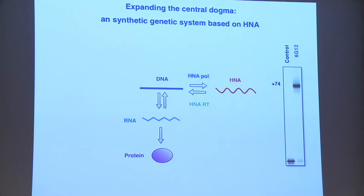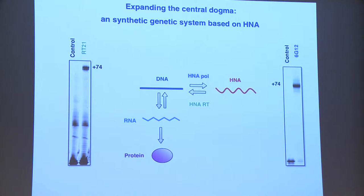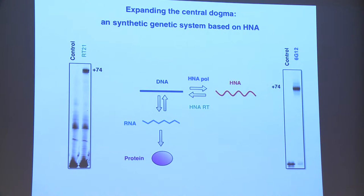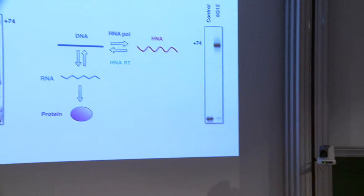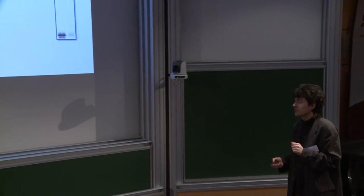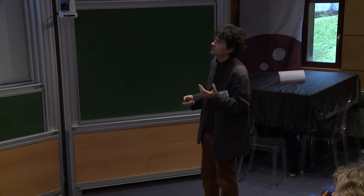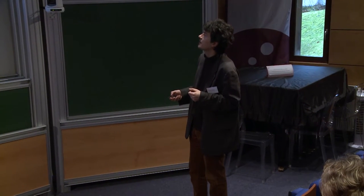That really closes the loop. Now we can move genetic information from DNA into HNA — this entirely unnatural genetic polymer — and we can read it out with an HNA reverse transcriptase. Going via a DNA intermediate, these can be cloned and sequenced very easily, and the information transfer proceeds with a very decent fidelity of about 1 in 10^-3. This is roughly equivalent to what you get in RNA viruses.